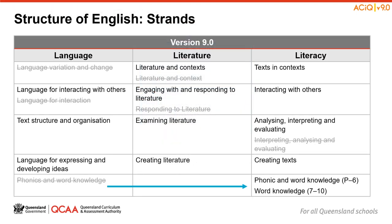The Australian Curriculum English positions the strands as being interrelated. The three strands — Language, Literature and Literacy — work together to strengthen students' knowledge, understanding and skills. The Language strand develops students' knowledge of the English language and how it works. The Literature strand engages students in the study of literary texts of personal, cultural, social and aesthetic value. This is what makes this an English curriculum and not a literacy curriculum.